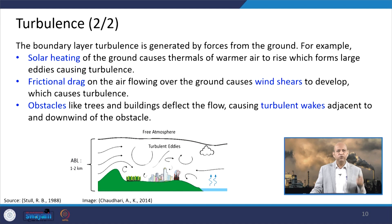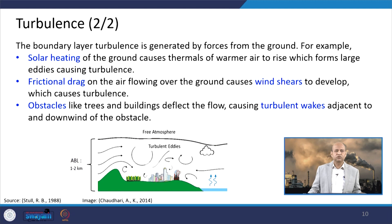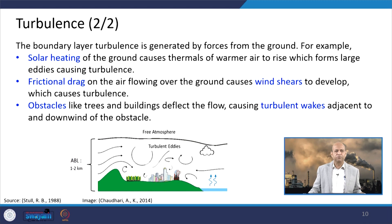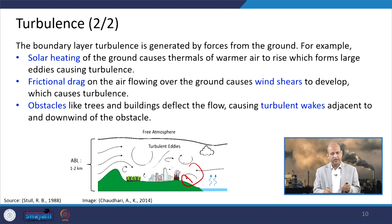Turbulence in the boundary layer is generated by forces from the ground: solar heating causes thermals of warmer air rising from the ground, forming large eddies. Frictional drag from air touching the ground develops wind shears that also cause turbulence. Obstacles like trees, buildings, or undulated terrain cause wakes. Near buildings, stacks are not preferred because the plume tends to come down due to wake formation.